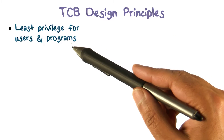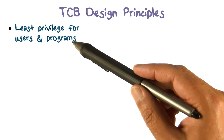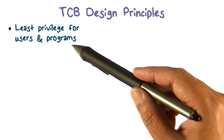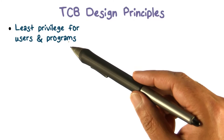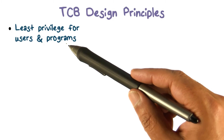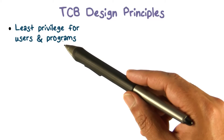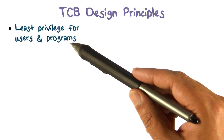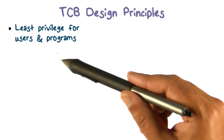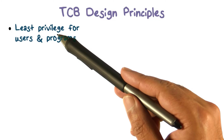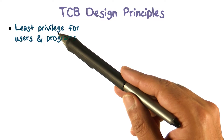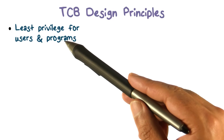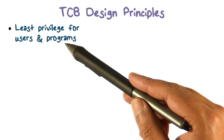One of the design principles was least privilege. Anytime you're executing, the idea is that you execute with the fewest possible privileges. If something goes wrong — trustworthy means there's a high likelihood that things go the way you want them to, but there's no guarantee, there's no proof — we have damage containment. The fewest things will be affected because what resources can be abused is based on what privileges you hold at the time. So holding as few as you need, you want to use that principle even when you design the trusted computing base.